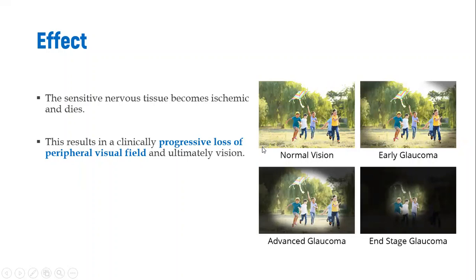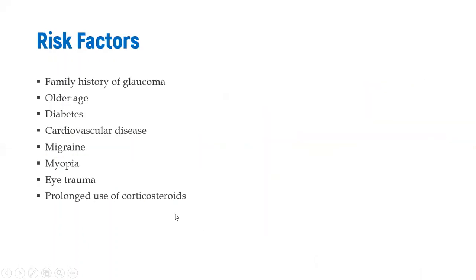Visually, in normal vision we see clearly; in early glaucoma, dark spots appear in the periphery, then the peripheral area becomes progressively darker, moving toward the center, until we end up with what is called tunnel vision.